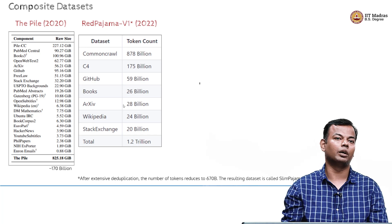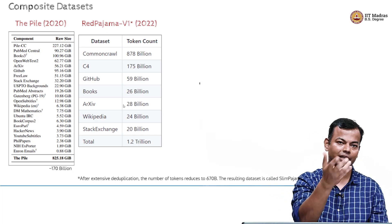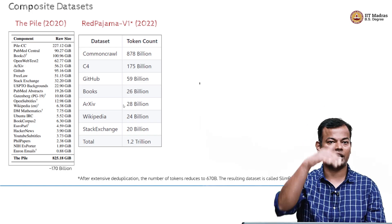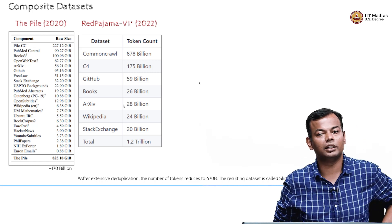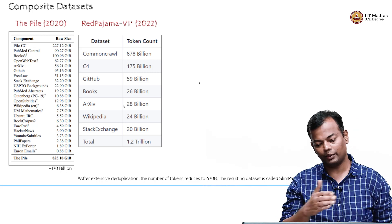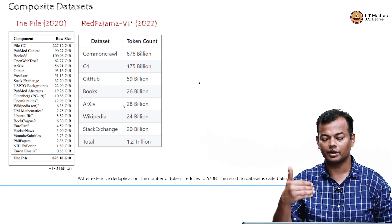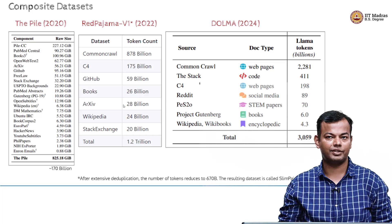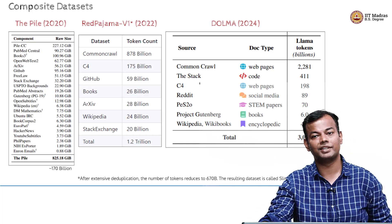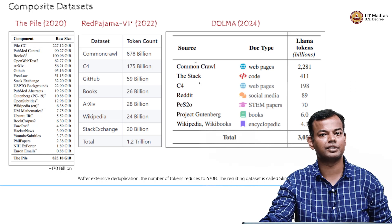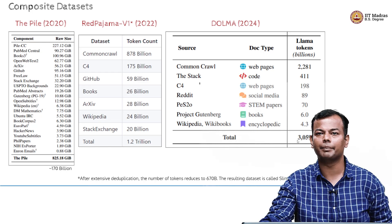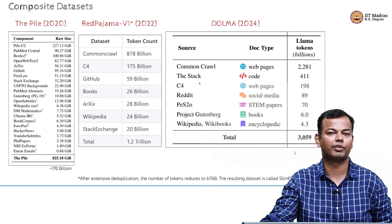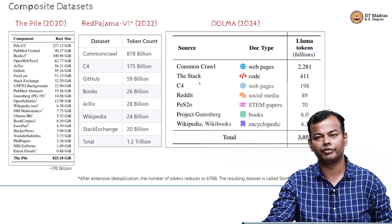RedPajama has Common Crawl plus C4, which should tell you it would have duplicates since C4 is itself built from Common Crawl, plus GitHub, books, arXiv, and more diversity. The total was 1.2 trillion tokens, but after deduplication it was reduced to 670 billion tokens, and that version was released as SlimPajama. Then we have Dolma, the most recent dataset from Allen AI, which has 3 trillion tokens with good diversity in sources and a thorough cleaning pipeline — though much of it is dominated by Common Crawl at almost 2 trillion tokens. It also has code, social media content, STEM papers, books, and encyclopedia content.